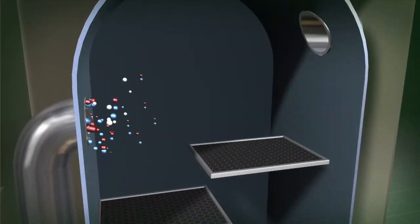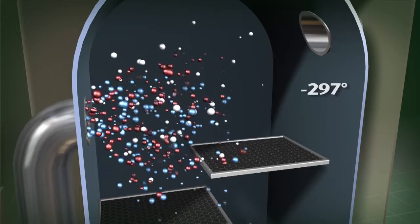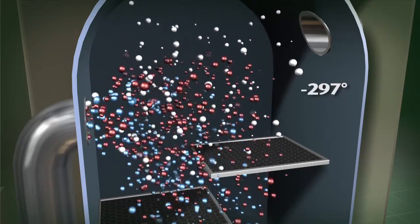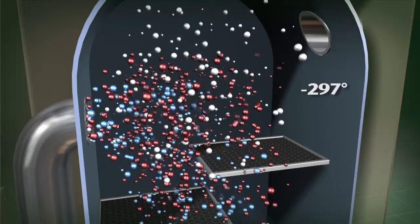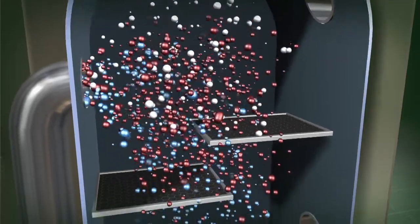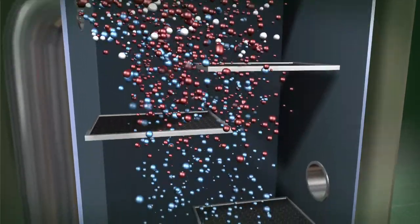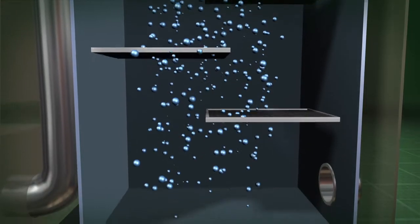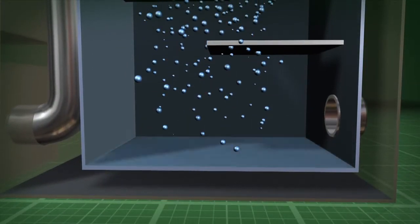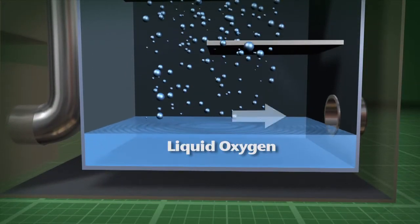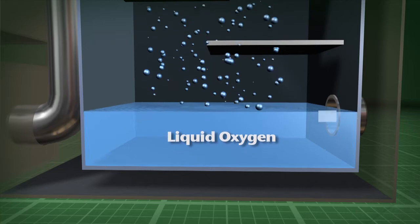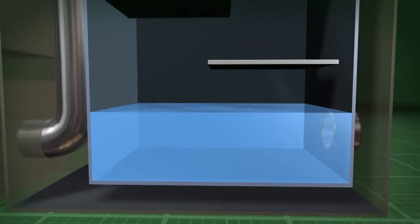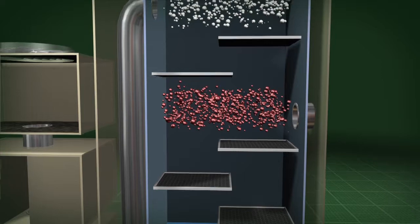Here, the air is supercooled to minus 297 degrees Fahrenheit. This is the temperature at which oxygen molecules transform from their natural gaseous state to a liquid state. The liquid oxygen collects at the bottom of the separation chamber, where it's siphoned off for further purification.